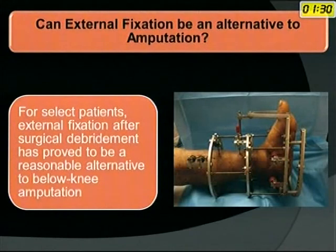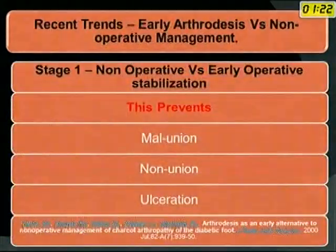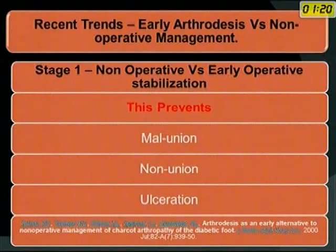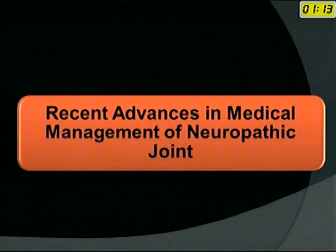Can external fixation be an alternative to amputation? Yes — in select patients, external fixation after surgical debridement has proved to be a reasonable alternative to below-knee amputations. The recent trend is early operative stabilization, which is known to prevent mal-union, non-union, and ulceration in stage 1 disease.